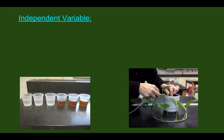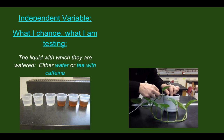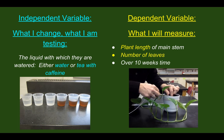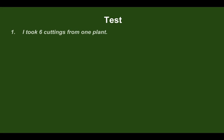Next, show your independent and dependent variables. The independent variable — what I changed and tested — is the liquid with which the plants are watered: either water or tea with caffeine. My dependent variable — what I measured — is the plant stem length and the number of leaves over ten weeks.